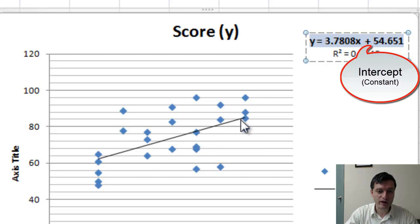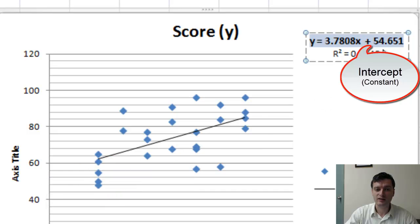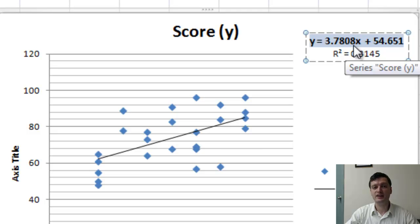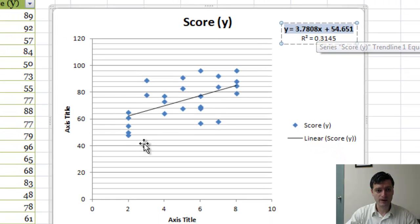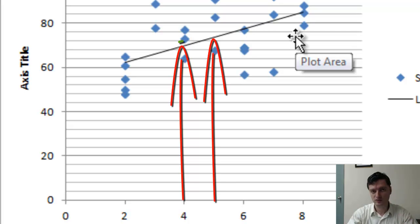This is the point where this line, regression line, intersects the y-axis of the dependent variable. It's somewhere right over here. This extends down here at where we cross at 54 points. And 3.78 is the slope, rise over the run, which is the amount of the score increase for each hour extra study.